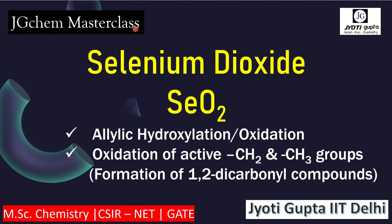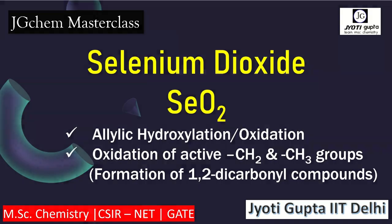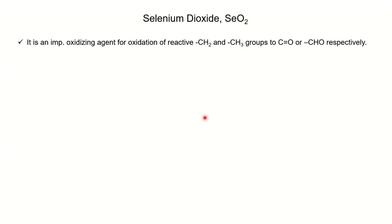Hello everyone, welcome to JGGM Masterclass. In today's video, we will learn about selenium dioxide reagent, which is a very good reagent for allylic hydroxylation or oxidation. And if you want to do the oxidation of active methylene and methyl groups, basically for the formation of 1,2-dicarbonyl compounds, we use selenium dioxide. The reagent is very important not only for MSc, but you can find questions in CSIR-NET and GATE examinations as well.